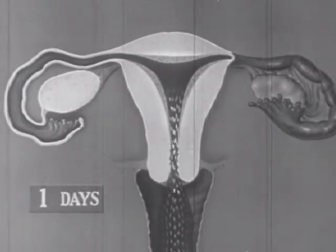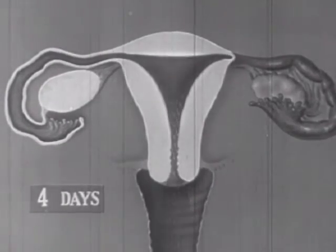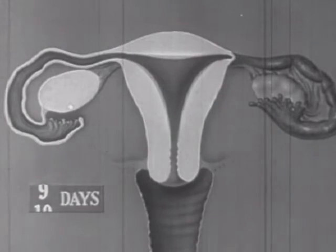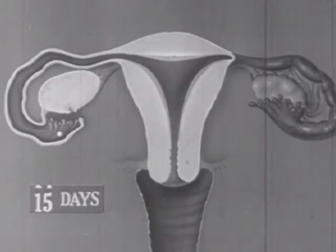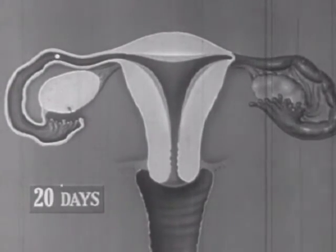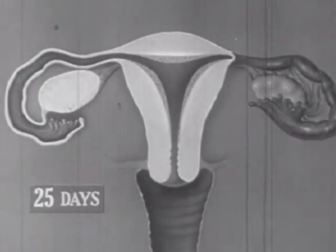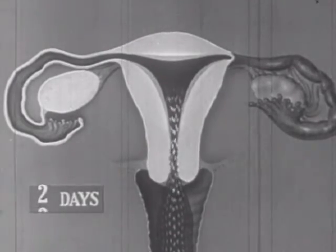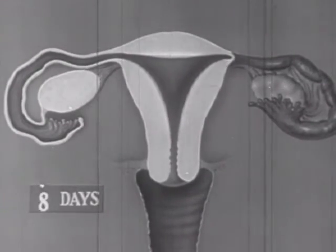If we call the onset of menstruation the first day of the menstrual cycle, we can watch the various elements as they recur during each 28-day period. After the menstrual flow stops around the fourth day, the uterine lining begins to build up again. Meanwhile, eggs are being formed in the ovaries. In the normal cycle, ovulation occurs about the 14th day and an egg is extruded into the fallopian tube. It starts its slow passage toward the uterus, but if not fertilized, it dissolves away or disappears in the tube. After the 28th day, menstruation occurs again and the cycle is repeated.